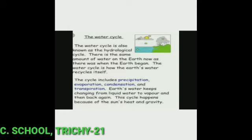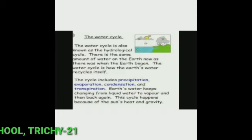The cycle includes precipitation, evaporation, condensation and transpiration. Earth's water keeps changing from liquid water to vapor and then back again. This cycle happens because of the sun's heat and gravity.